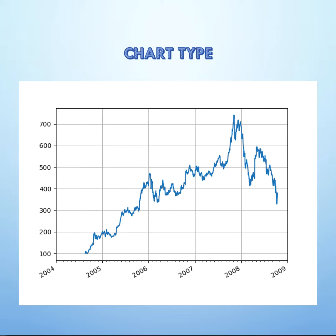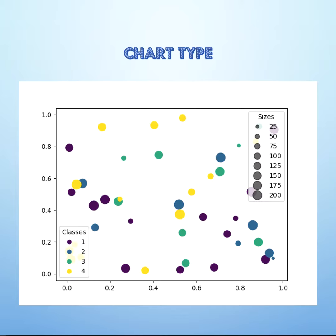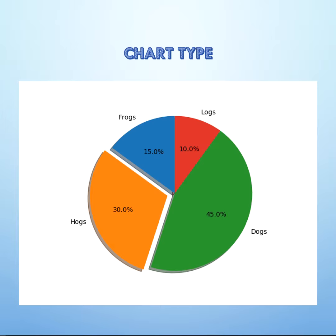Scatter and bubble plots are used when we are looking for the correlation between two or more variables. The scatter plot is a classic and fundamental plot to be used. The pie chart is something business analysts always use to compare between small numbers of variables.